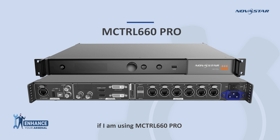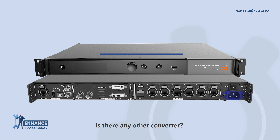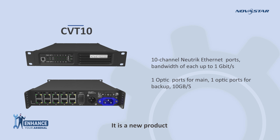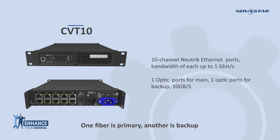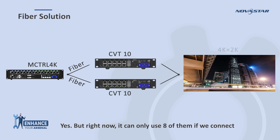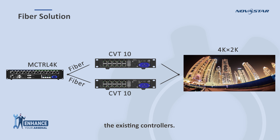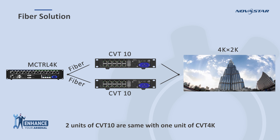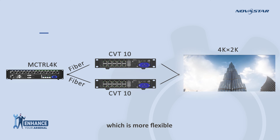Maybe you will ask: if I'm using the M-Control 660 Pro and one fiber is enough, is there any other converter? Yes, we have the CVT10 — it is a new product. There are two fiber ports and 10 Ethernet ports. One fiber is primary, another is backup. One fiber equals 10 ports, but right now it can only use eight of them when connecting existing controllers. Two units of CVT10 are equivalent to one unit of CVT4K, which is more flexible.